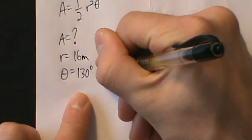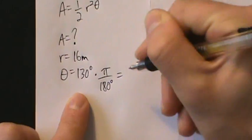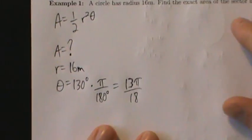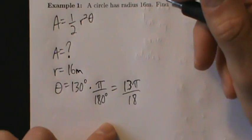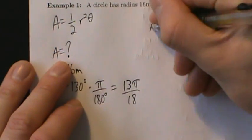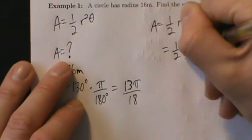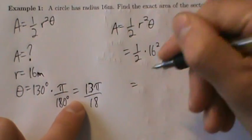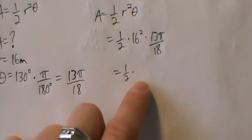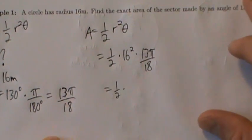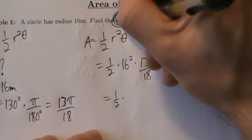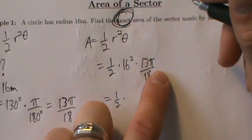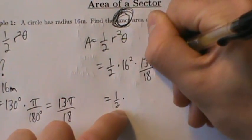Converting 130 degrees gives us 13 pi over 18 radians, which cannot be simplified further. Now we know r and theta in radians, so we can use the formula: A equals one-half times 16 squared times 13 pi over 18. We're looking for the exact area, so leave pi — do not approximate with a decimal, since pi cannot be exactly expressed as a decimal.